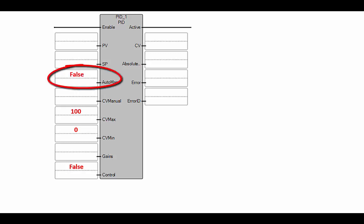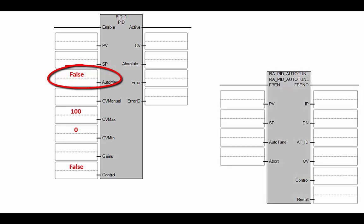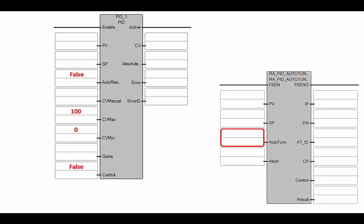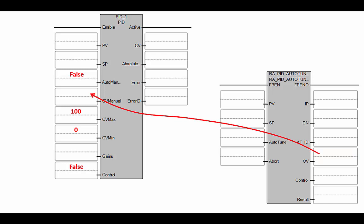If we set the auto or manual mode to false, that puts the PID controller in manual mode — and that's what we need to do if we want the auto-tuning instruction to take over. The auto-tuning instruction has an input for the process variable and the set point, and if we set this auto-tuning mode to true, the auto-tuning sequence begins and calculates its own control variable. That control variable needs to be passed into the manual control variable input of our PID, because when the PID is in manual mode, that manual CV is what gets passed to the CV output controlling the process.